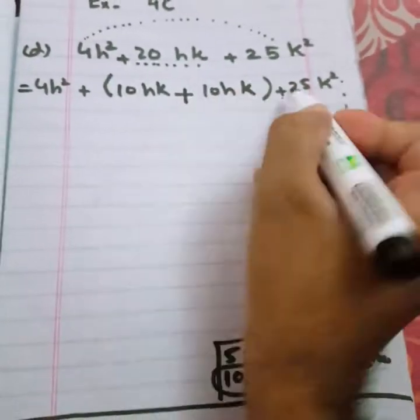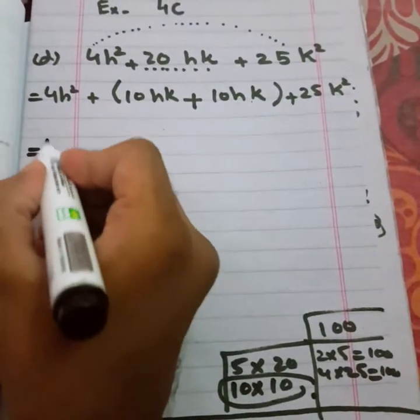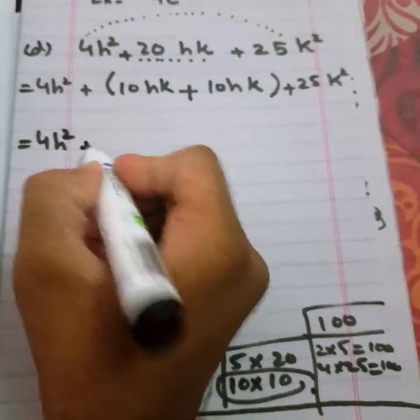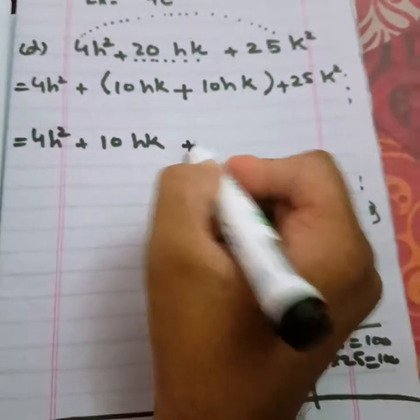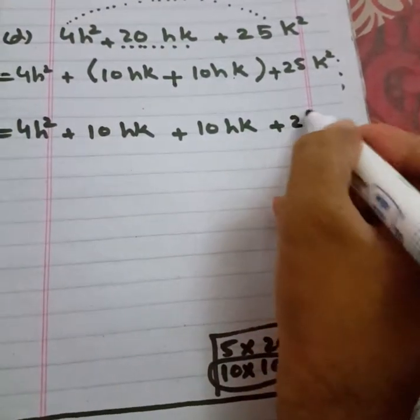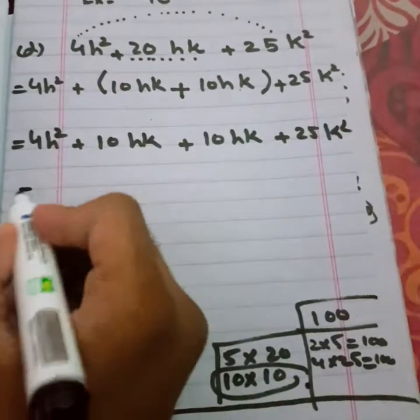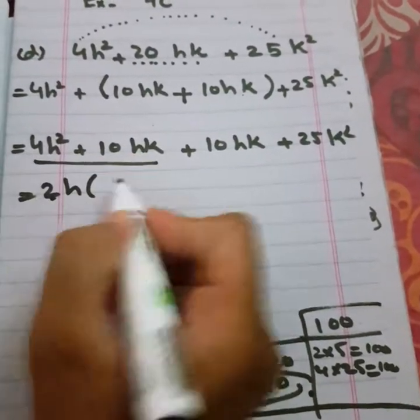Which is common from this pair? 2h is common. 2 times 2 is 4, so 2h will be inside. From here, 5 is common and k is also common. 5 times 2 is 10, h is common, only k will stay inside.